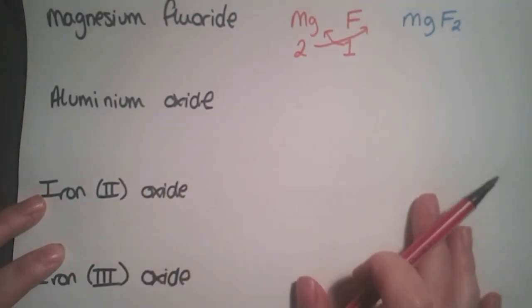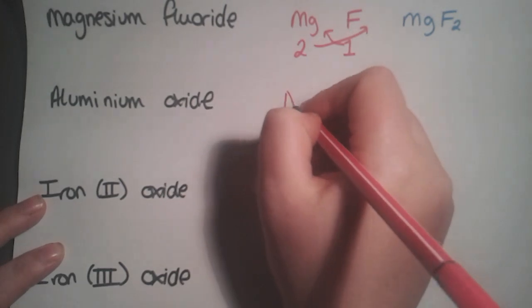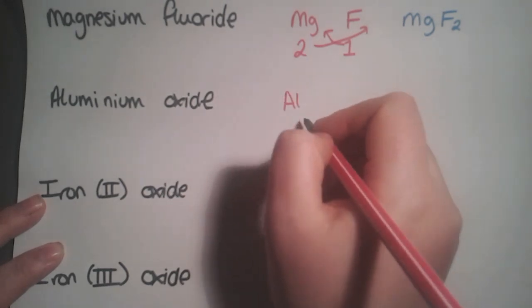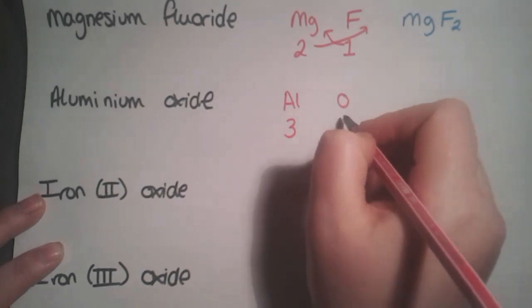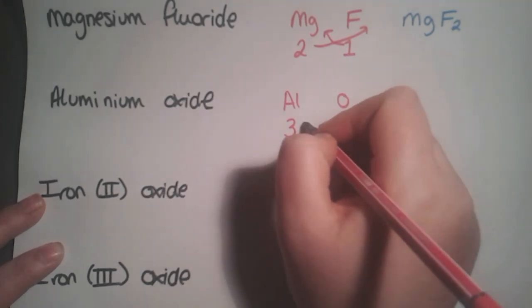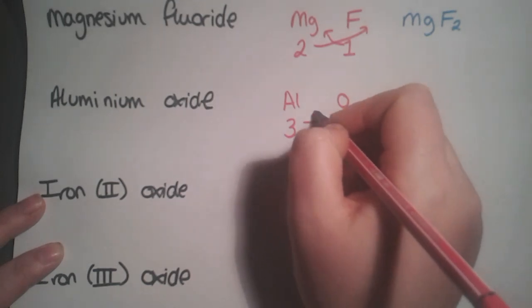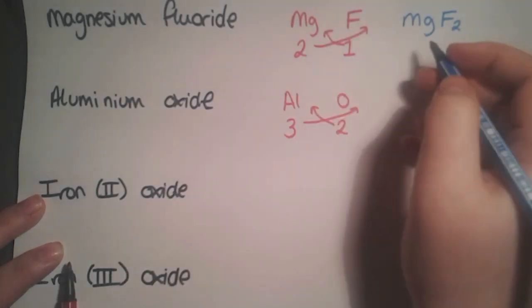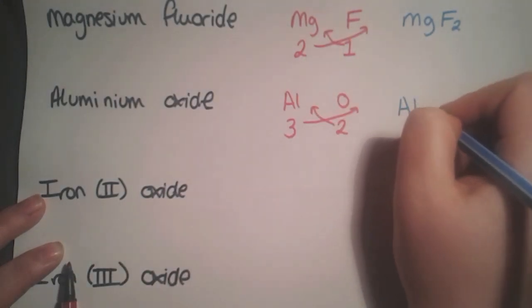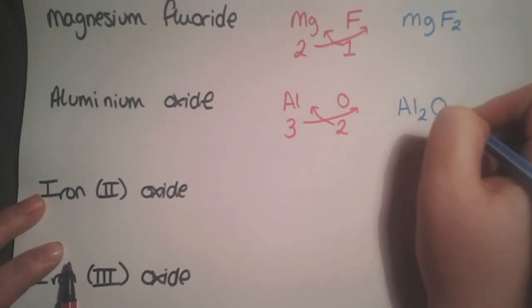Next example: aluminium oxide. Aluminium in group three has three outer electrons. Oxygen, as we've had before, is in group six with valency two. Swap over the valencies to give Al2O3.